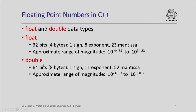The other data type for floating point numbers is double, which uses 64 bits or 8 bytes: 1 bit for the sign, 11 bits for the exponent, and 52 bits for the mantissa. With double you have a much larger range of magnitudes, from 10 raised to –323.3 to approximately 10 raised to 308.3. It is interesting to calculate these ranges from the knowledge of the number of bits in the exponent and mantissa.